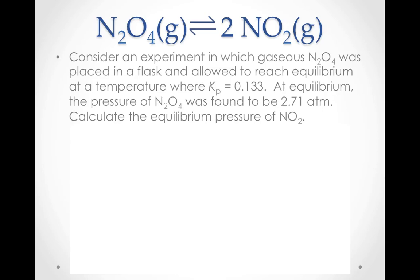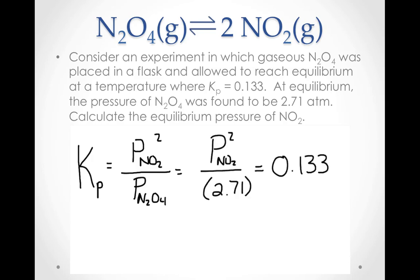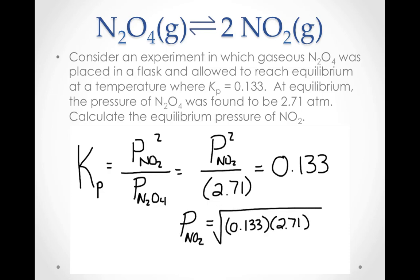Consider an experiment in which gaseous dinitrogen tetroxide, which decomposes to form gaseous nitrogen dioxide, is placed in a flask and allowed to reach equilibrium at a temperature where Kp is equal to 0.133. If the equilibrium partial pressure of dinitrogen tetroxide was found to be 2.71 atm, what is the equilibrium pressure of nitrogen dioxide? This equilibrium expression can be written according to the law of mass action. By substituting the partial pressure of dinitrogen tetroxide at equilibrium and the equilibrium constant's value, we can solve for the partial pressure of nitrogen dioxide. The partial pressure of nitrogen dioxide at equilibrium is 0.600 atm.